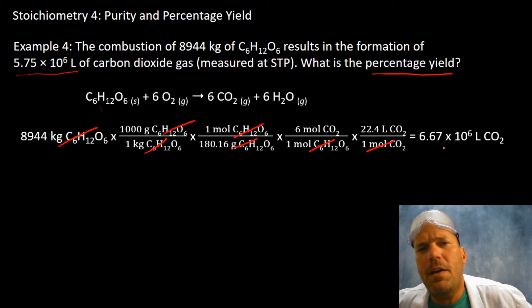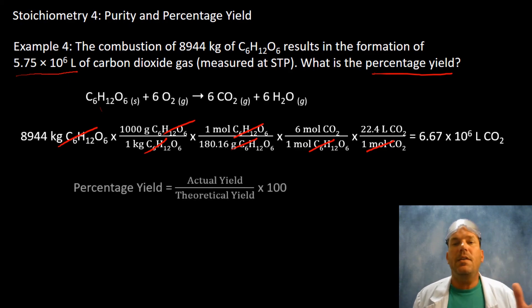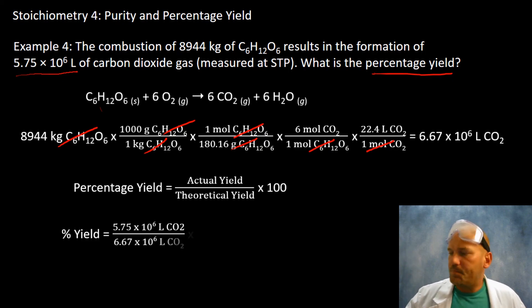Ask yourself, what is this value? Is this actual or theoretical? It's the theoretical value. So in your percent yield equation, you're going to pop in the numerator the value that was given to you, and in the denominator you're going to pop in the value that we just calculated, and you will get the percentage yield of 86.2%.